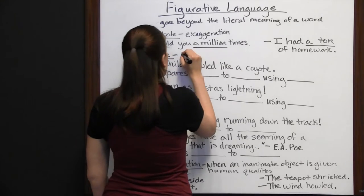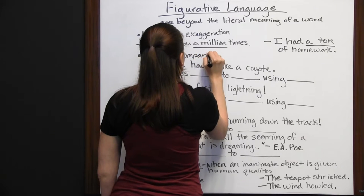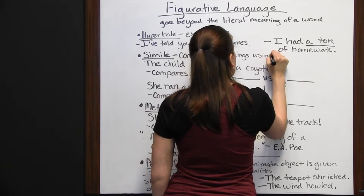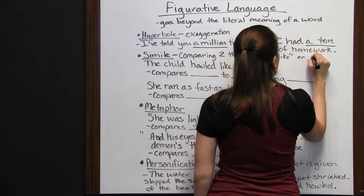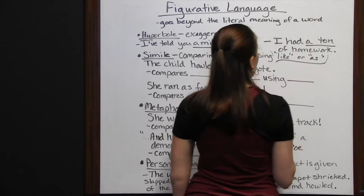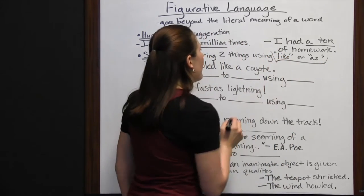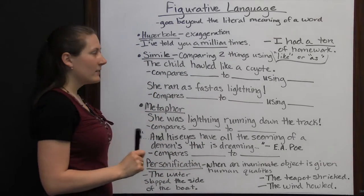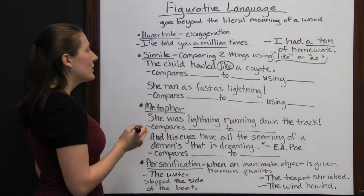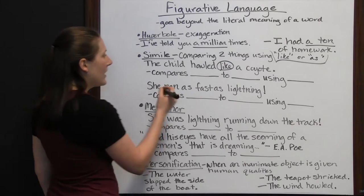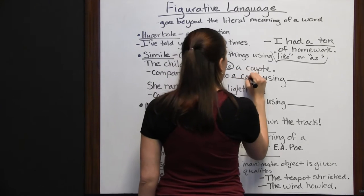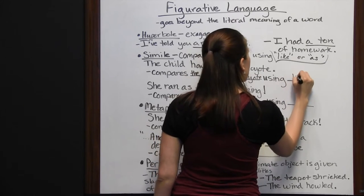Next, we've got simile, which is comparing two things using like or as. You have to use those words like or as, or it's not going to be a simile. So: "The child howled like a coyote." We see our word like. You're comparing two things in this sentence — the child is compared to a coyote using the word like.